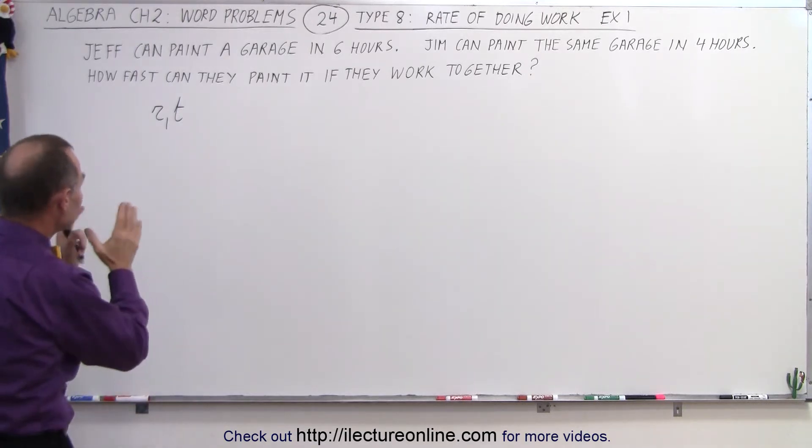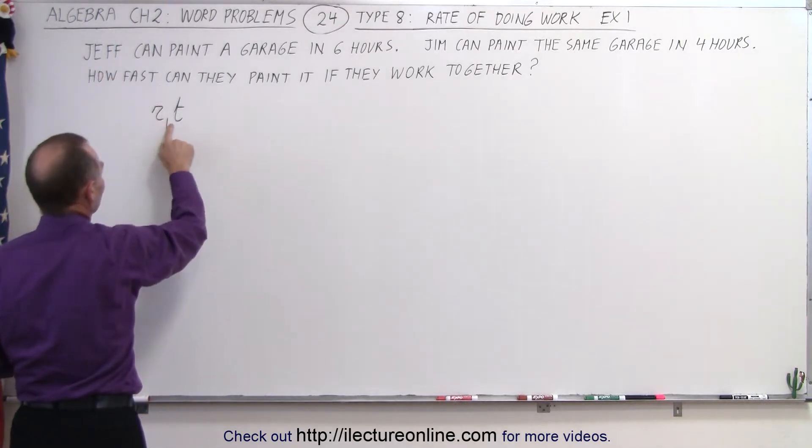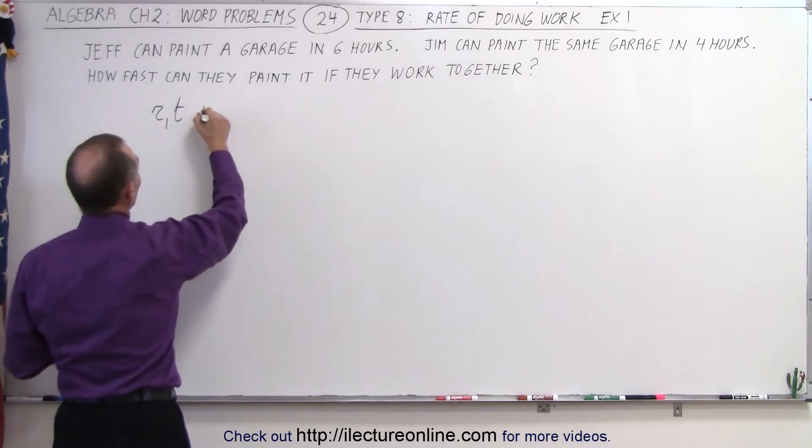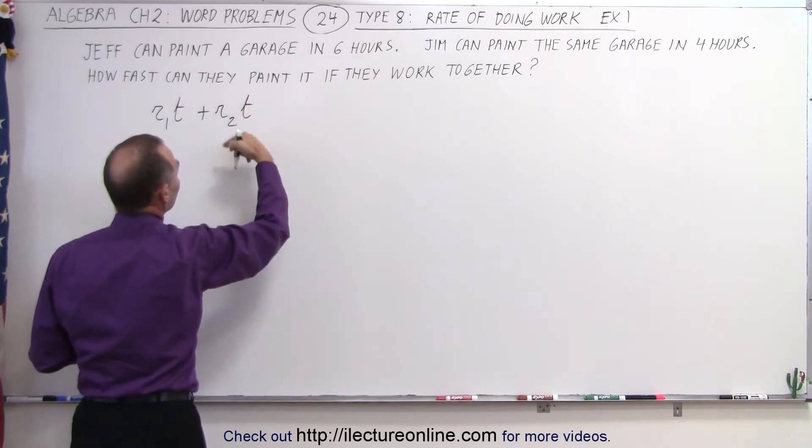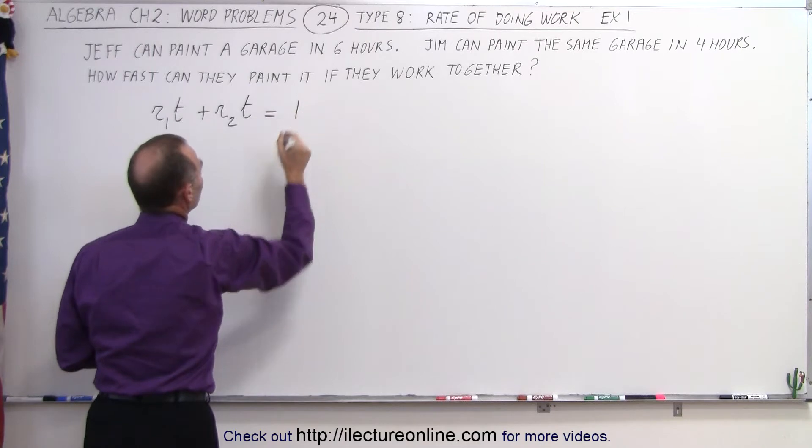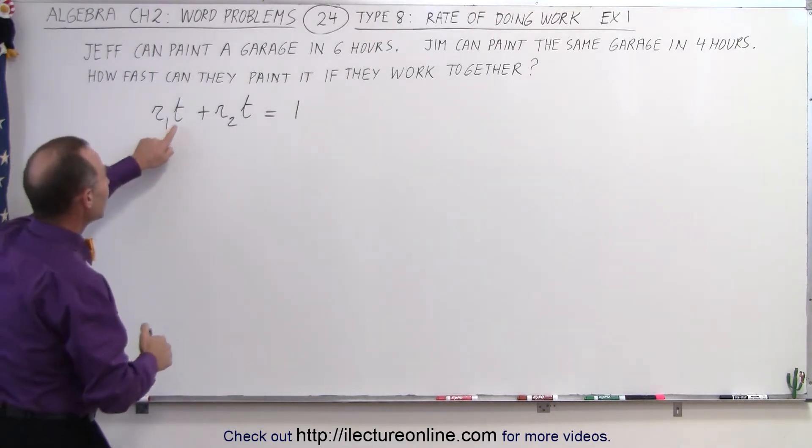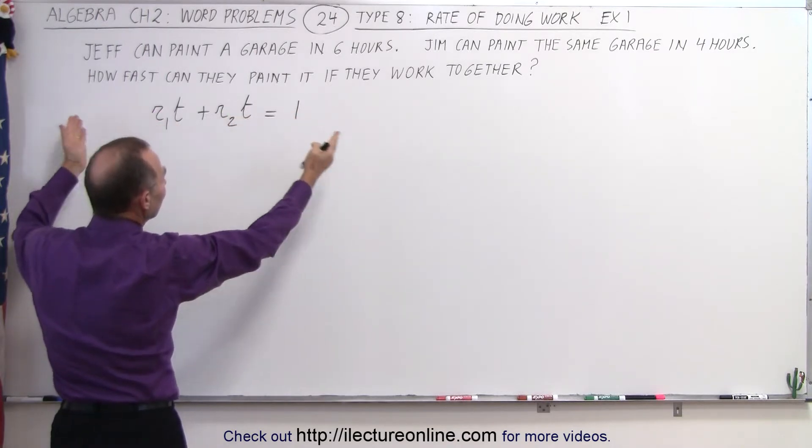Now again, you need the equation where the rate of the first person, let's say Jeff, times the time that he'll spend painting when they're working together, plus the rate of the second person, in this case Jim, times the time that he'll be painting when they work together. And that will then equal to the whole job done. So that's the equation we want to get to.